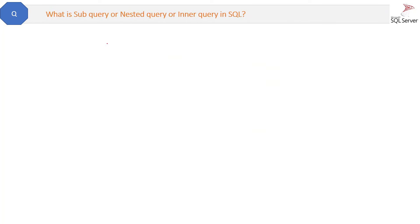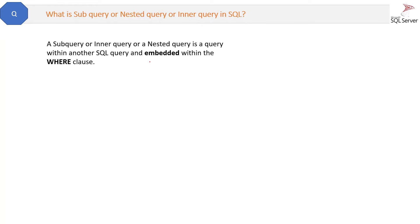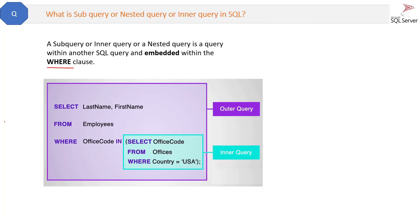What is a subquery, nested query, or inner query in SQL? All three terms mean the same thing. A subquery or inner query is a query within another SQL query, embedded within the WHERE clause. In the example, this is the outer query, and inside the WHERE condition we have the inner query. It is that simple — the inner query, subquery, or nested query is embedded inside the WHERE condition.